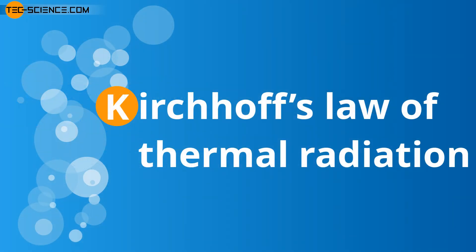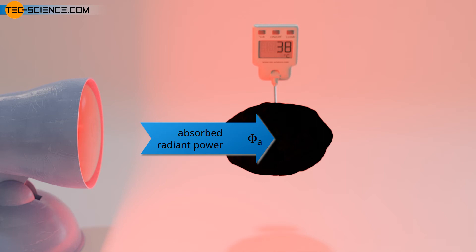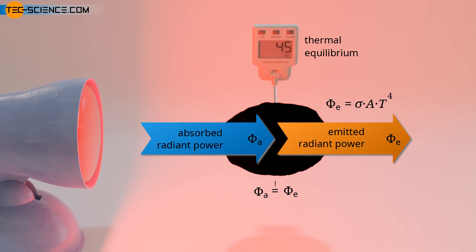In the following, a blackbody is considered which is irradiated by a heat lamp. By definition, the blackbody will absorb all incident radiation. The absorbed energy leads to an increase in temperature, and the blackbody begins to emit more and more radiation. Finally, over time, a thermal equilibrium will be reached in which the temperature no longer rises. In thermodynamic equilibrium, the radiant power emitted must therefore be the same as the absorbed radiant power. In the same way as the emitted radiant power increases with the fourth power of the temperature, the absorbed radiant power must also increase with the fourth power of the temperature. The law with which an ideal blackbody emits radiation according to the Stefan-Boltzmann Law must therefore also apply to the absorbed radiation in thermal equilibrium.